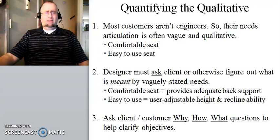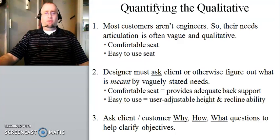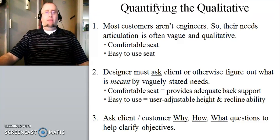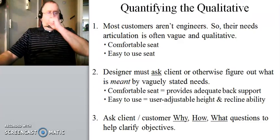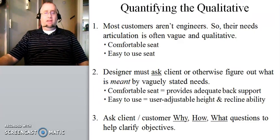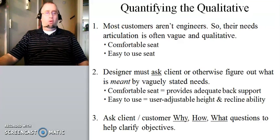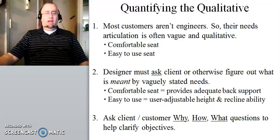The designer must literally ask the client what they mean and try to pin down vague statements into something more quantitative. For example, by talking to the client, you might discover that 'comfortable' means adequate back support — perhaps the seat they've been using gives them back pain and they want something that eliminates that. 'Easy to use' might refer to adjustability: how easily you can sit down, stand up, adjust the height, recline, or lock the seat into position. These intimate details come out of the conversation.